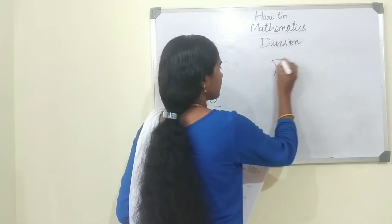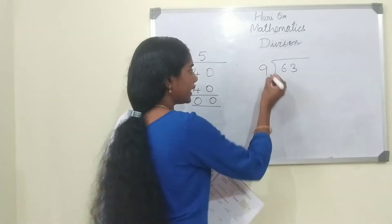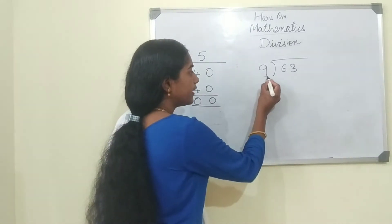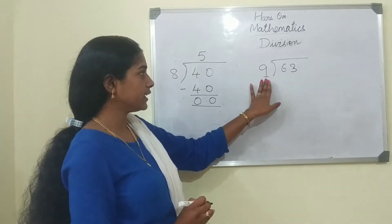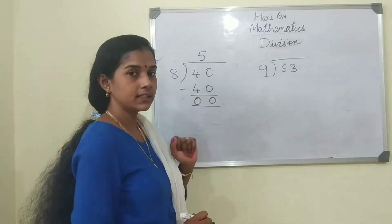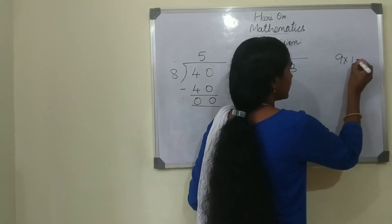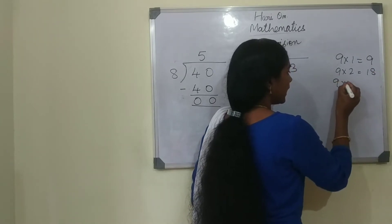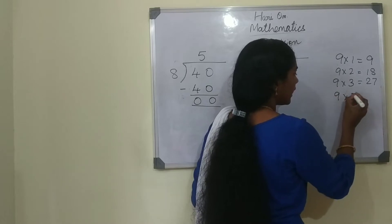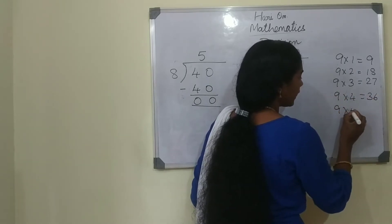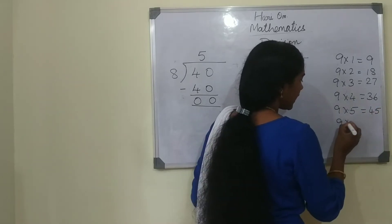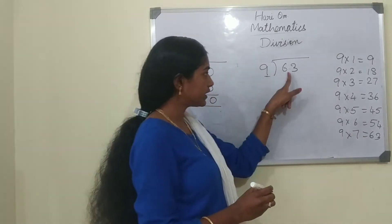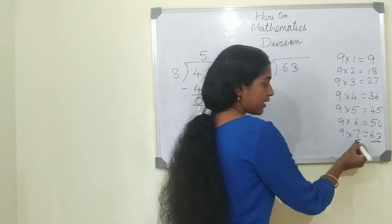Next question is 63 divided by 9. We should know the tables of 9 — in the 9 tables we should get the number 63. Let us say the tables: 9 ones are 9, 9 twos are 18, 9 threes are 27, 9 fours are 36, 9 fives are 45, 9 sixes are 54, 9 sevens are 63. So we got the number 63. It is 9 sevens are 63.